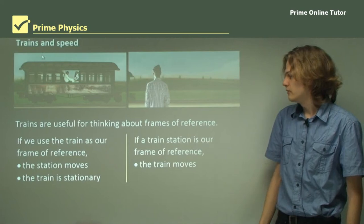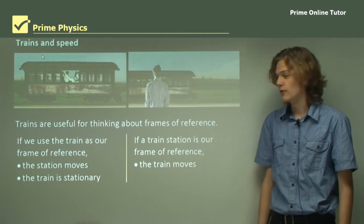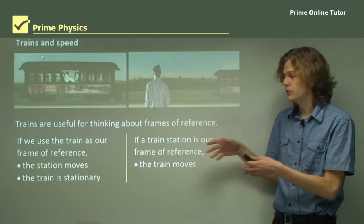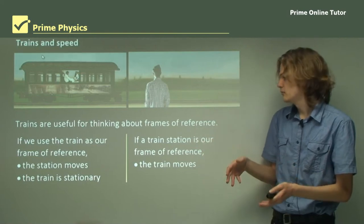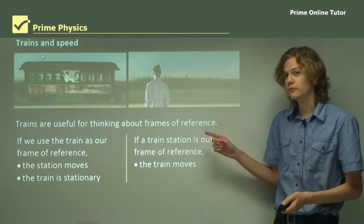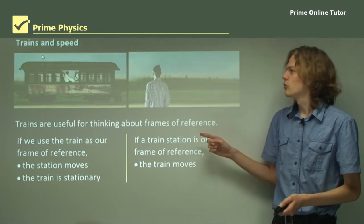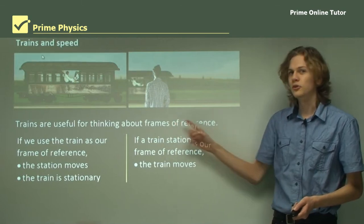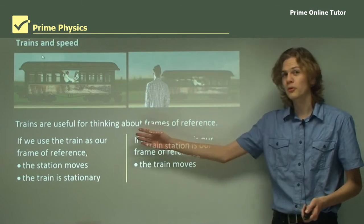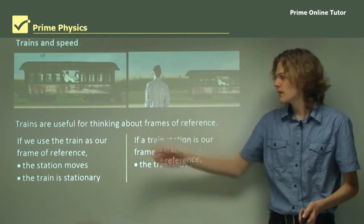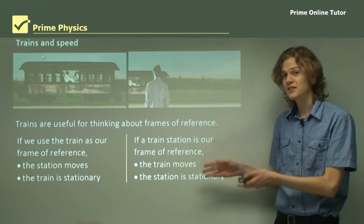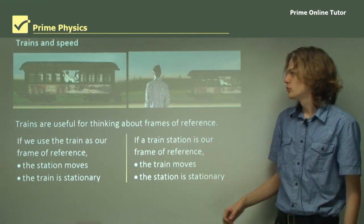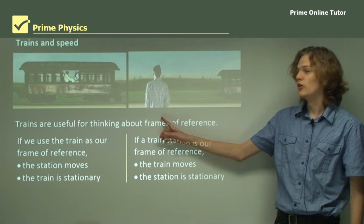On the other hand, if we use a train station as our frame of reference, then the background is still, the station is still, and the train is what's moving. We can see that the train is the object moving rather than the background rolling past us — that means the station is stationary.